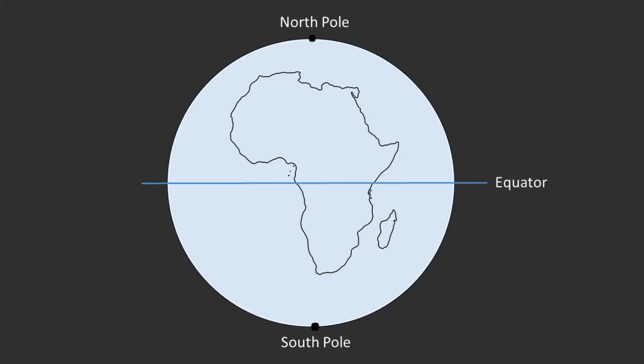The equator is an imaginary line that divides the Earth into the northern and southern hemispheres. The equator is midway between the North Pole and the South Pole. It's an imaginary line, not a physical structure. Places near the equator are usually warm all year round — think tropical vibes. Day and night are roughly equal near the equator, around 12 hours each.